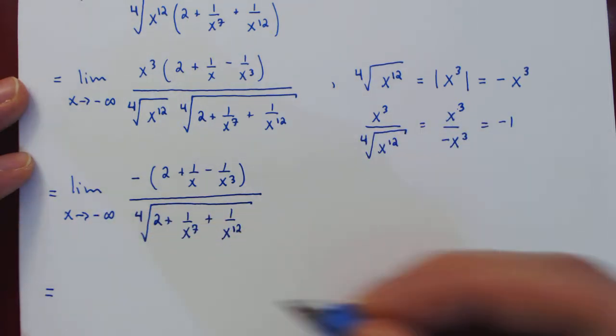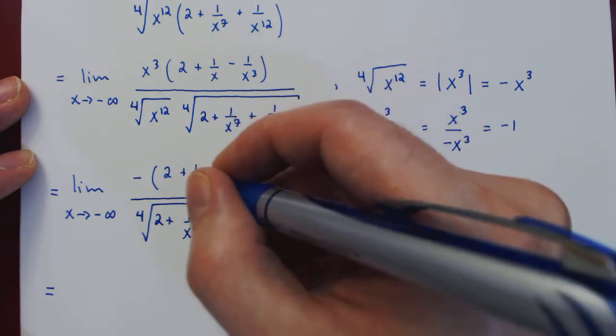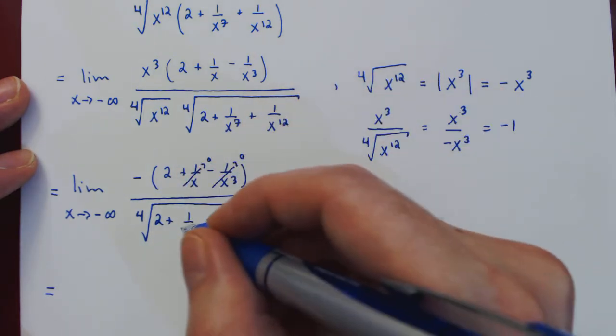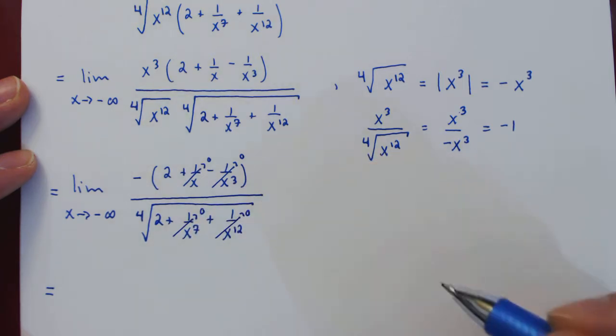And now, as we are about to see, the case is resolved. As x goes to negative infinity, 1/x goes to 0, 1/x³ goes to 0, 1/x⁷ goes to 0, and 1/x¹² also goes to 0.